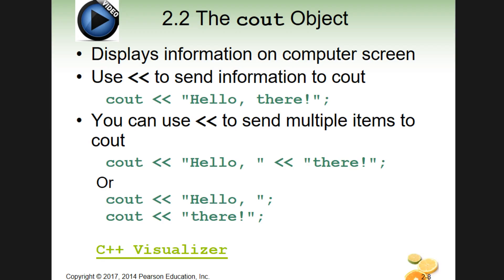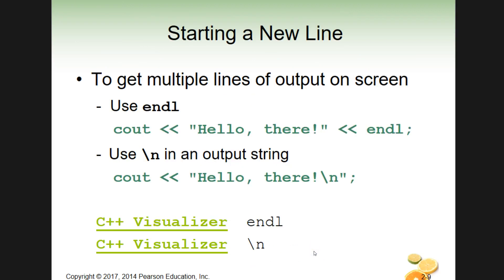There are two new ways of doing things we haven't seen yet. The first is 'endl' — that's an L, short for 'end line.' If we have cout with 'Hello there' followed by endl, it outputs the string and then drops the cursor to the next line. That's one way to add a newline.